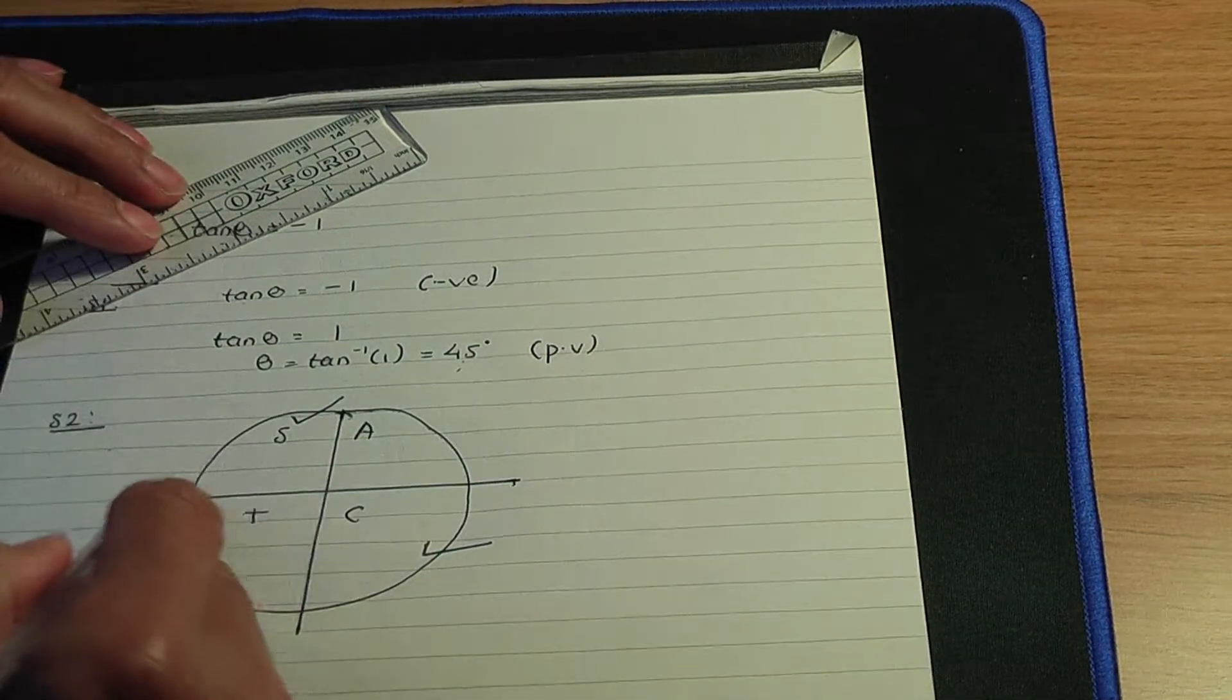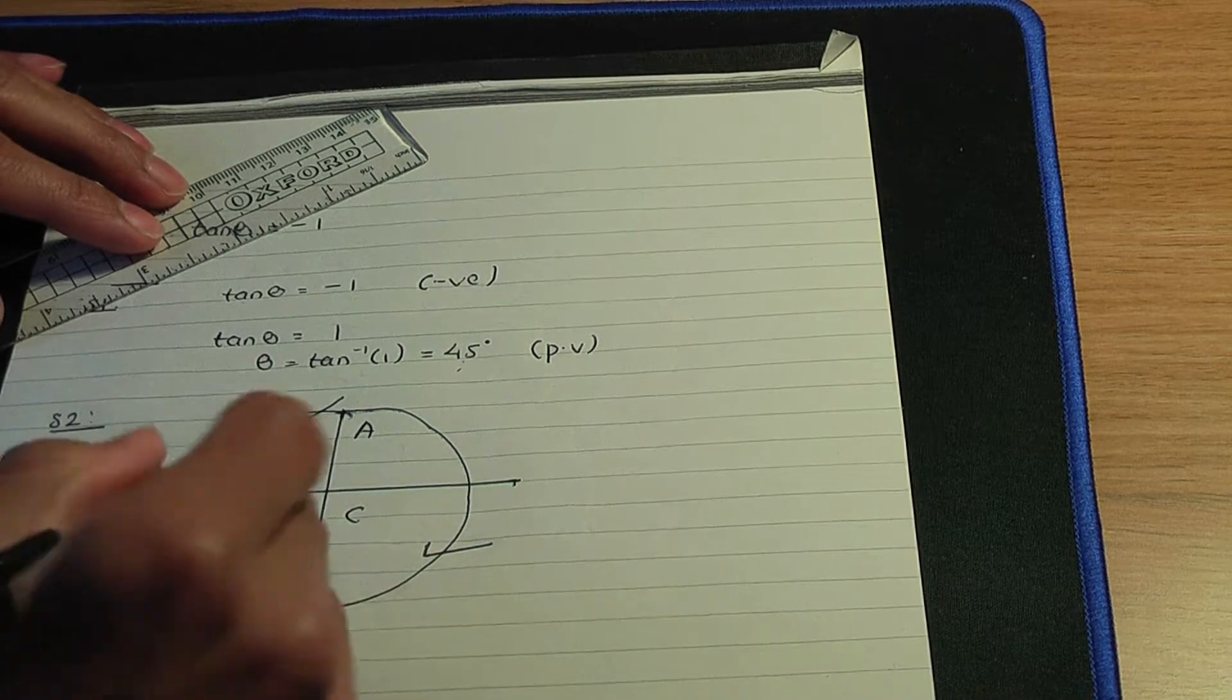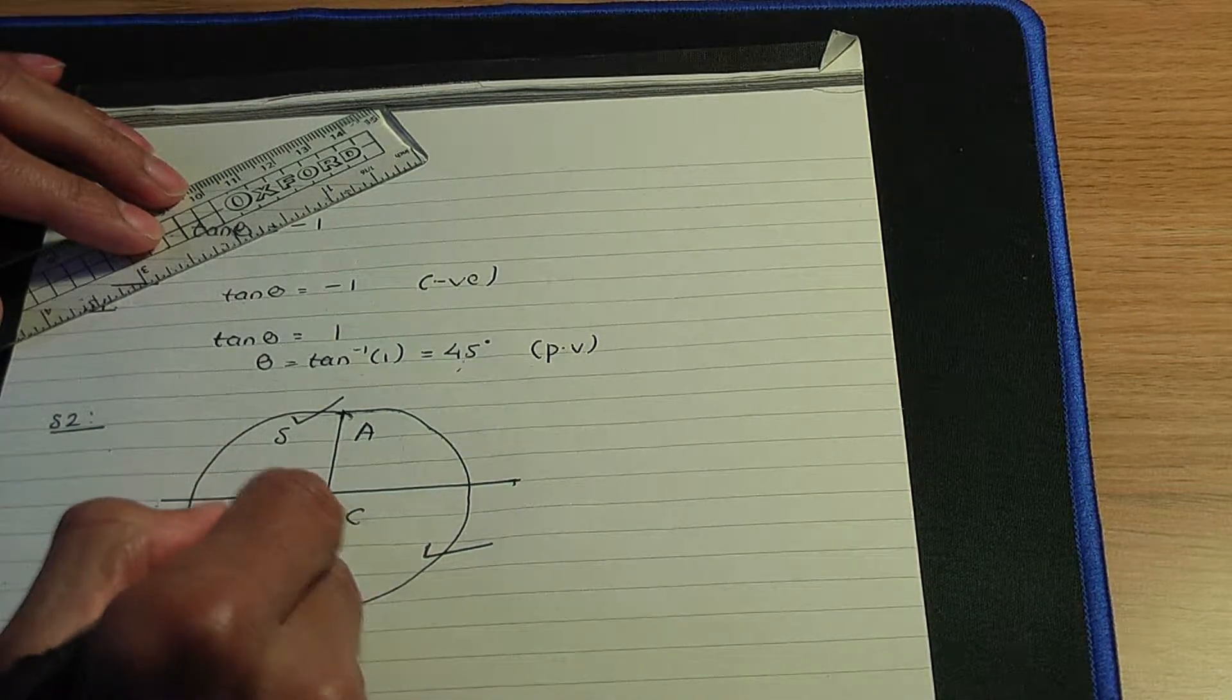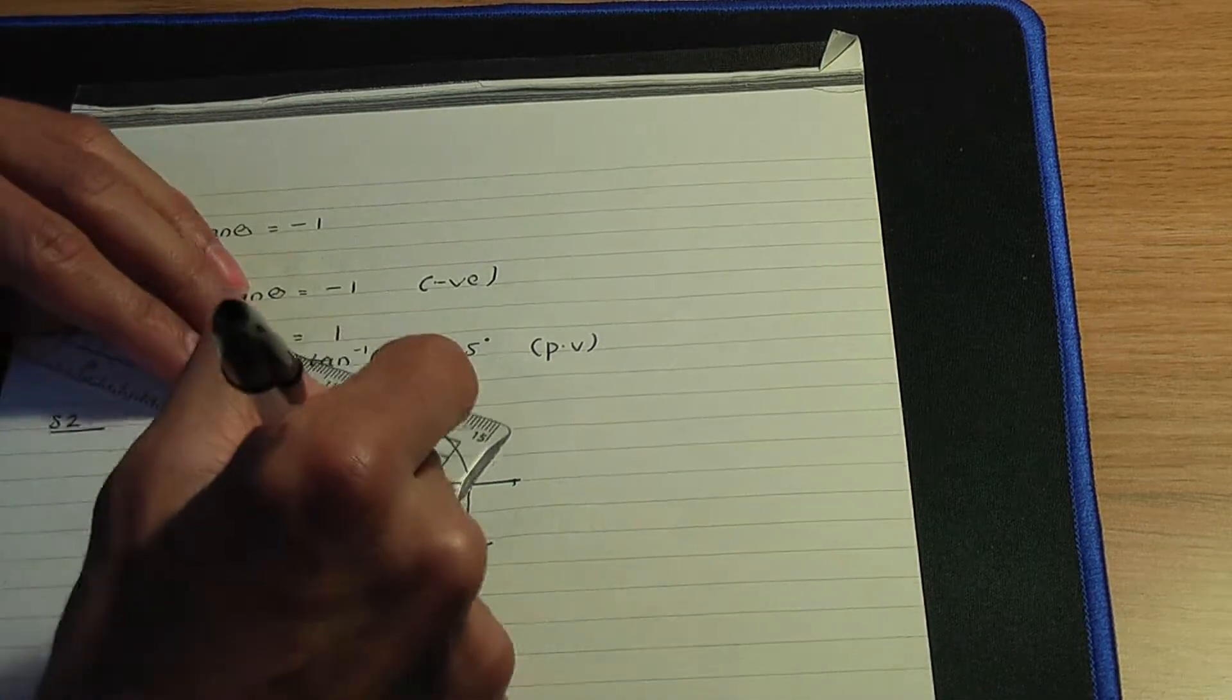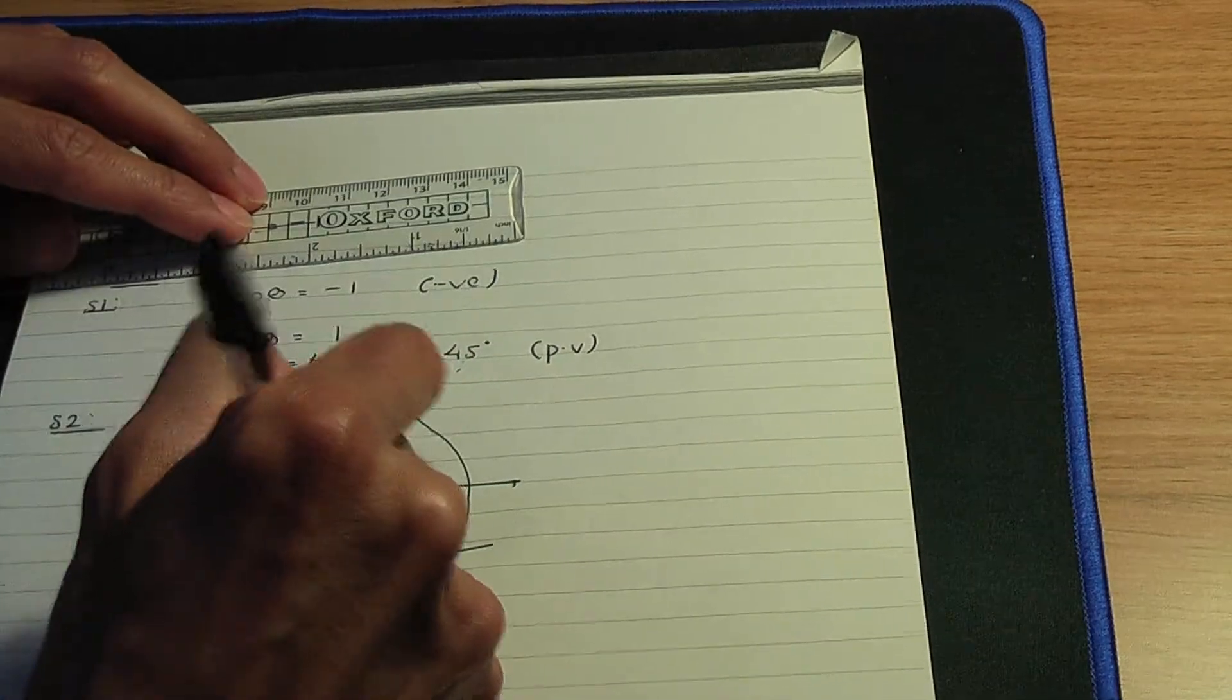So remember, measure your angles from the horizontal. So from the horizontal in quadrant 2, 45 degrees like so.